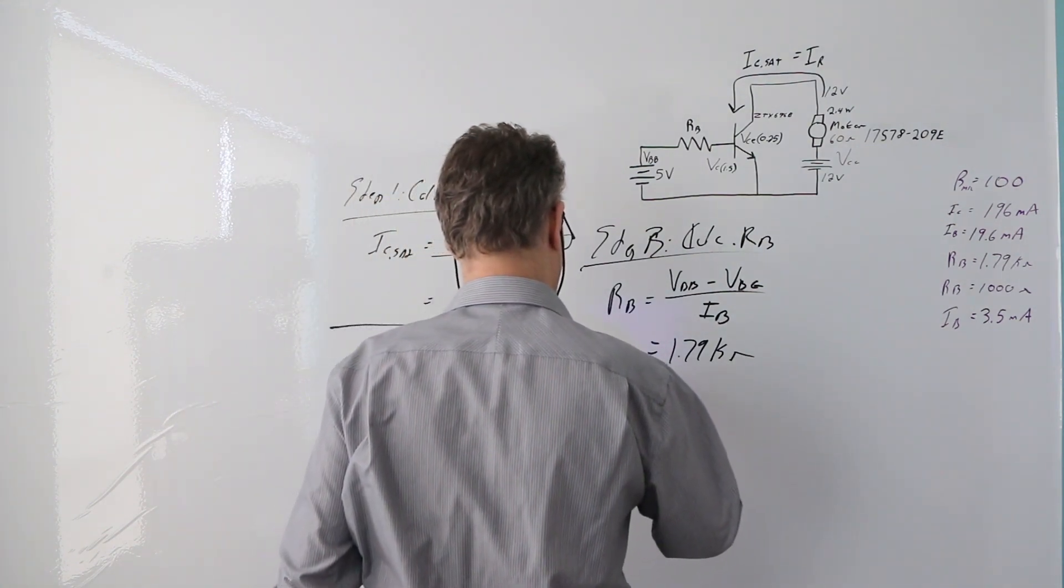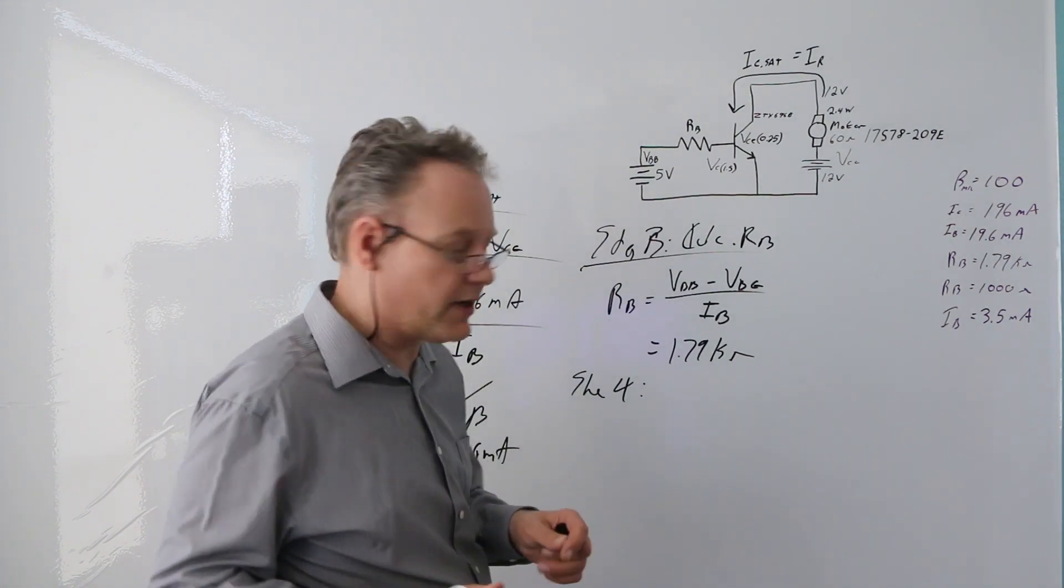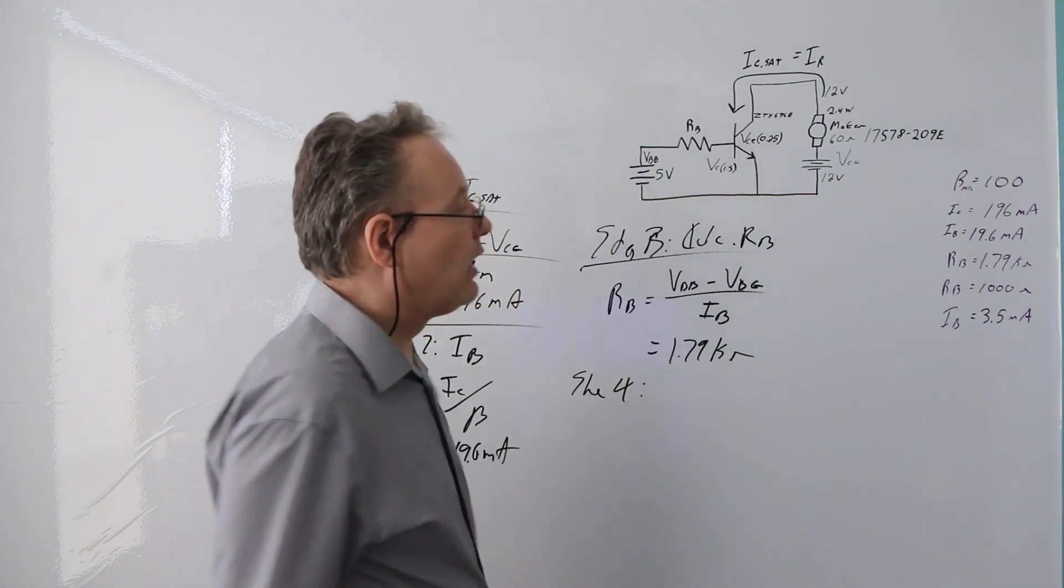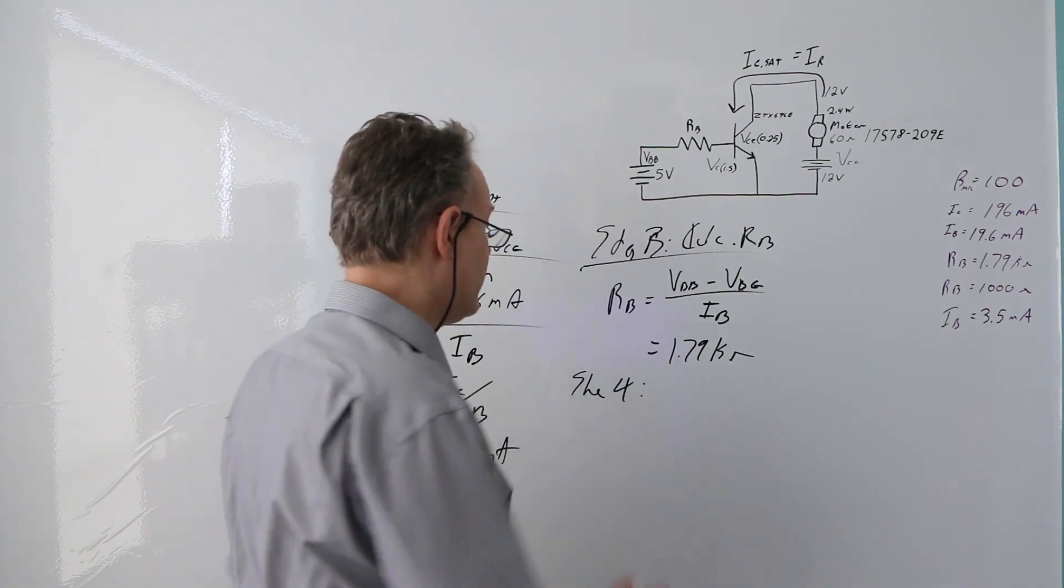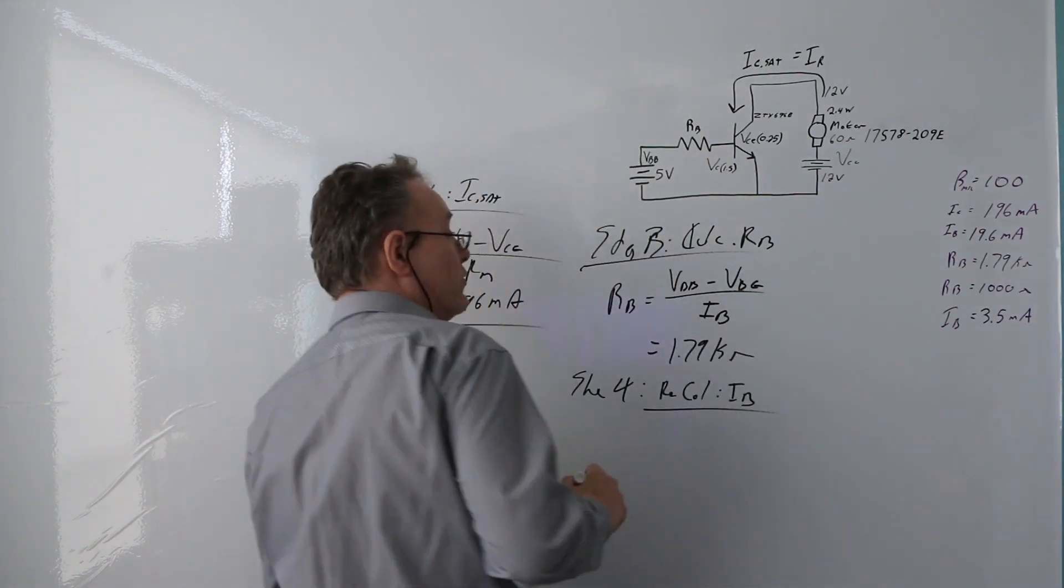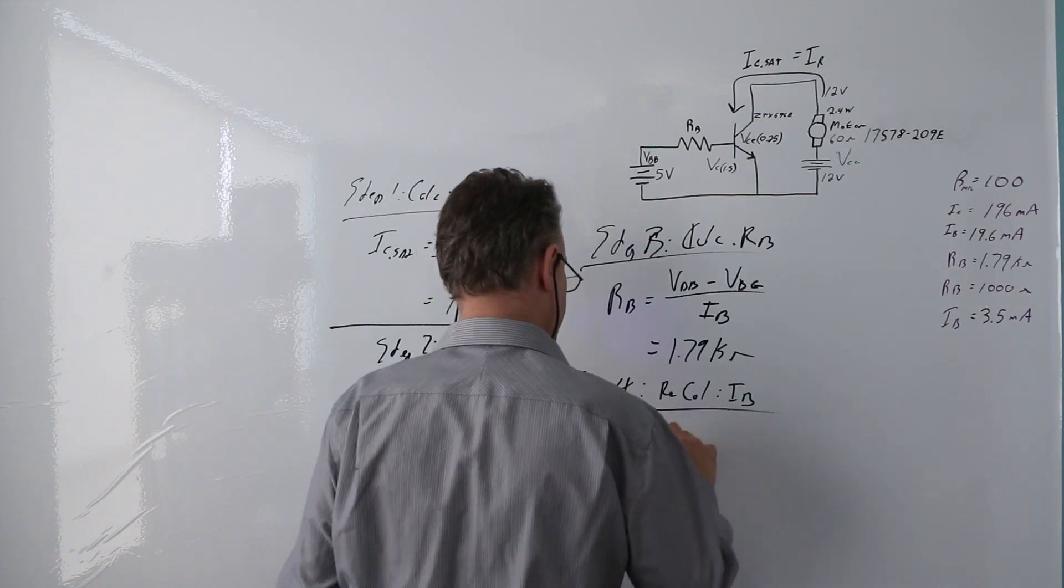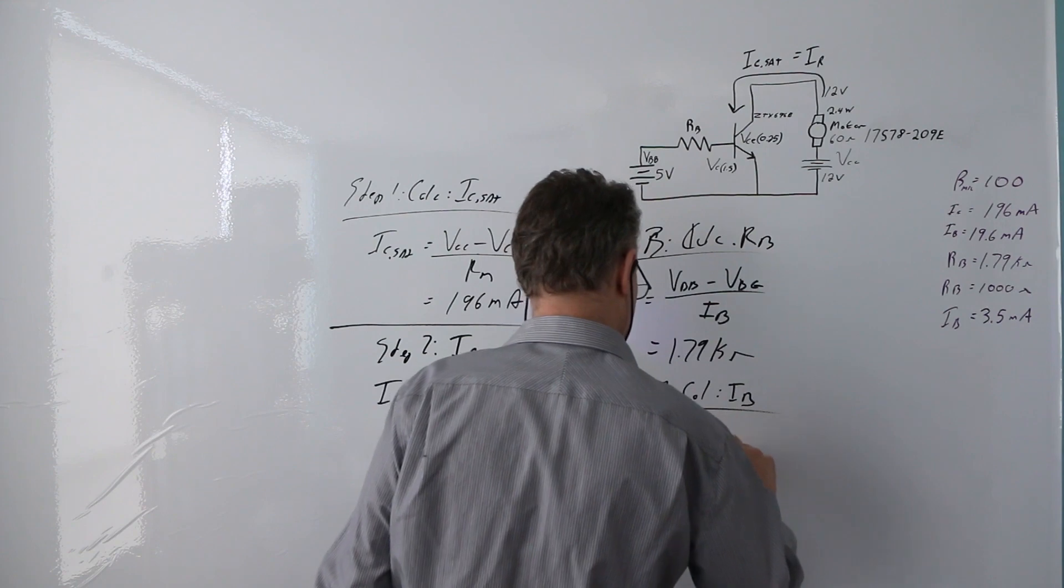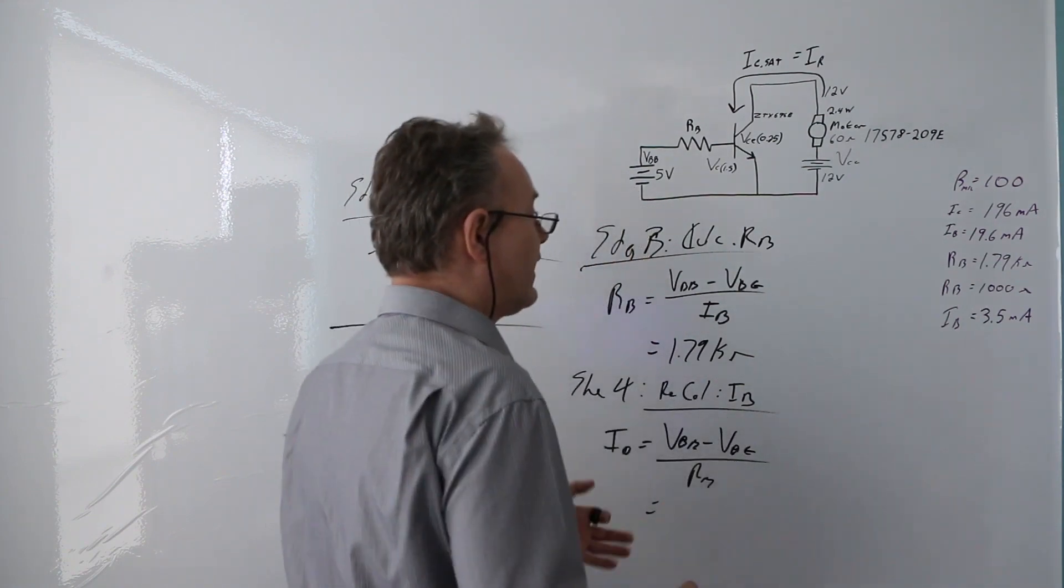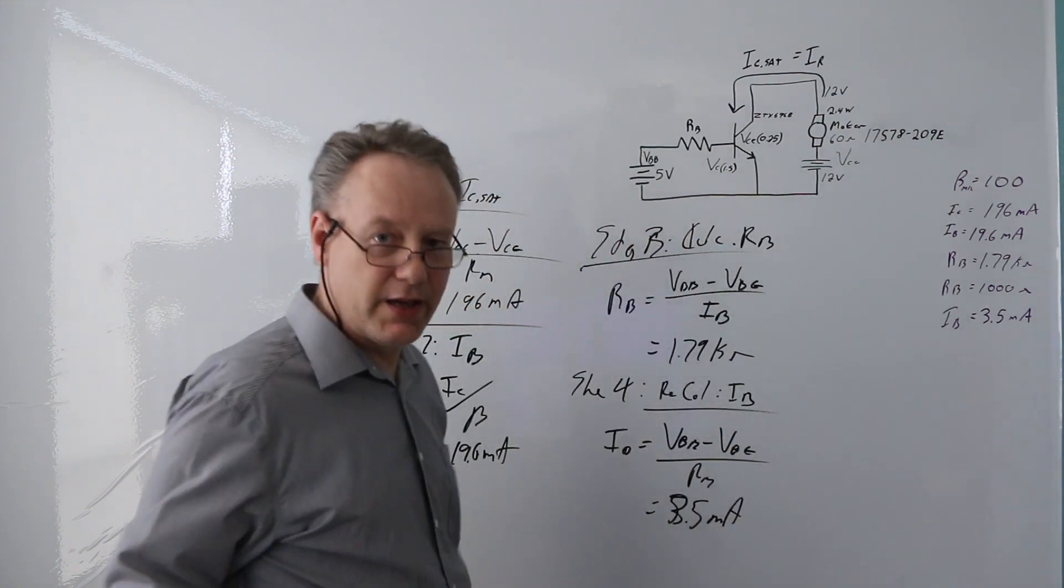Step four is we're going to choose a resistor and then we're going to calculate the new current. If I've got 1.79, I'm not going to maybe divide it by two, but I'm going to go pretty low. I've got a 1K resistor, I've got lots of them kicking around in my kit, so I'll just grab one of those. In this case I'll recalculate my IB with my new resistance. My IB is going to be my Vbb minus my Vbe divided by the resistance Rb. When I calculated that I got 3.5 milliamps.